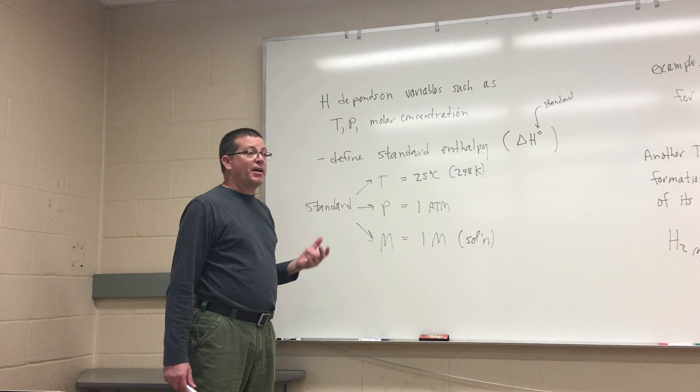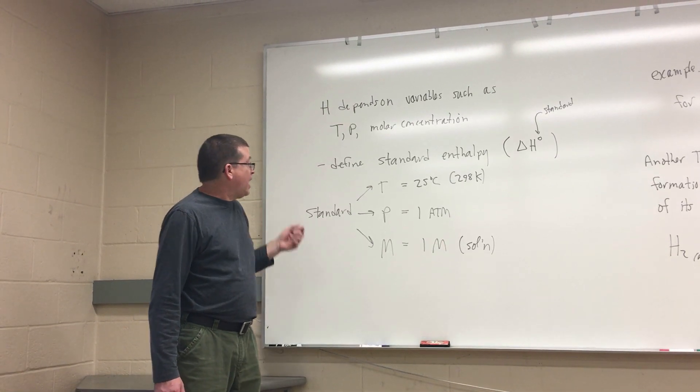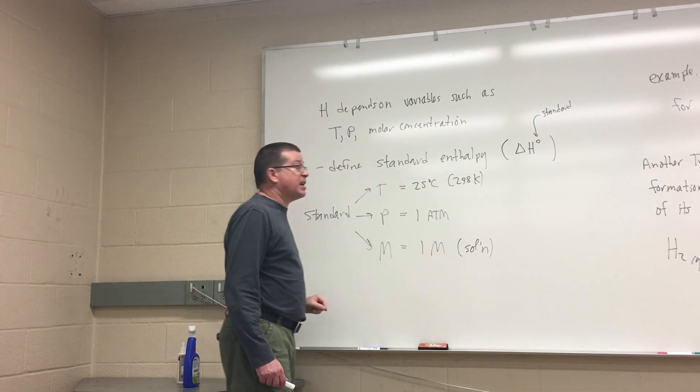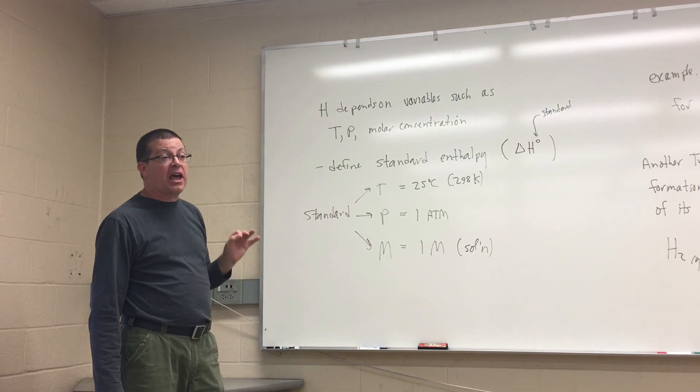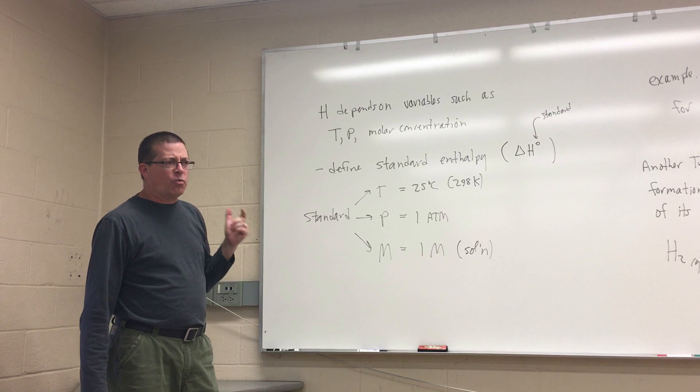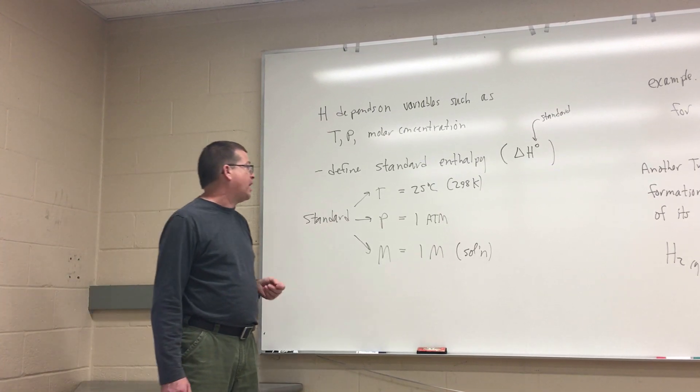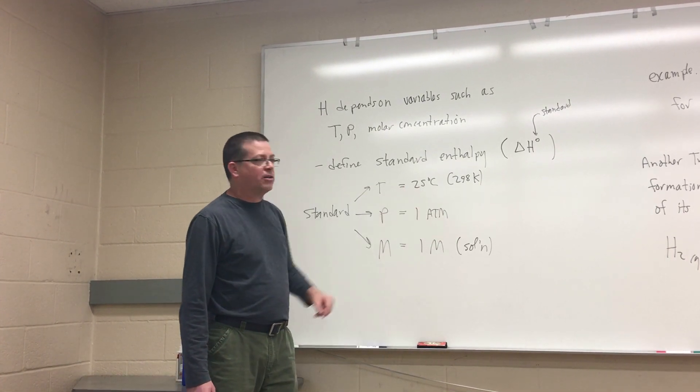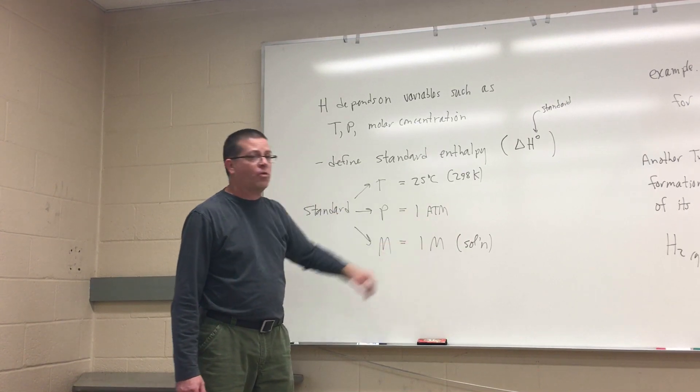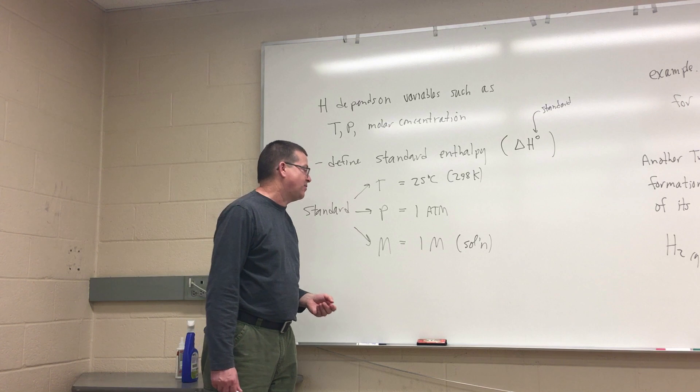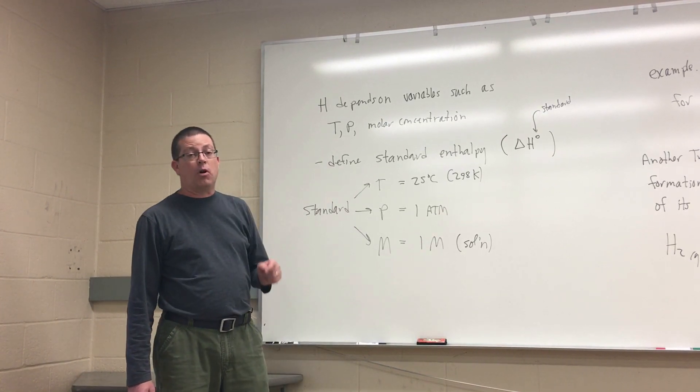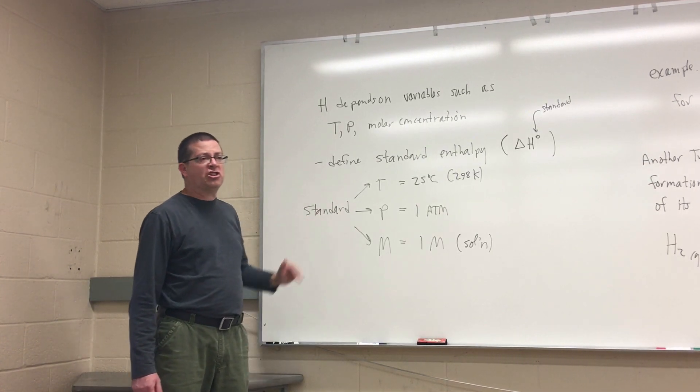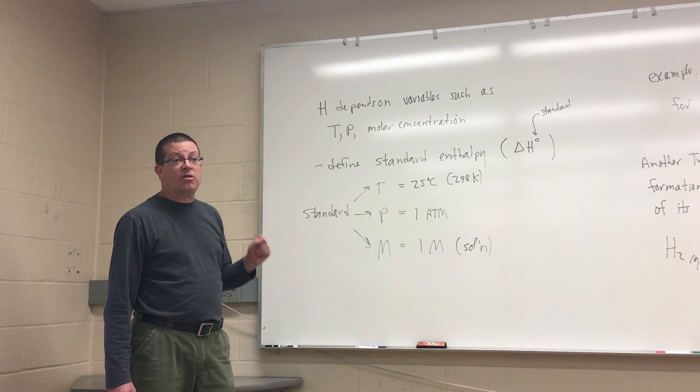Anytime I'm talking about a standard enthalpy, I'm going to represent that with this little zero or naught sign above the H there. So anytime you see that, you know that's going to be a standard enthalpy of some sort. So what are standard temperature, pressure, and molar values? That means any time I measure an enthalpy or an enthalpy difference, I'm going to measure it at 25 degrees Celsius, at an external pressure of one atmosphere, and if I'm talking about a condensed phase, I'm going to make that measurement at one molar concentration of the species of interest. These are my standard state conditions at which I will calculate standard enthalpy changes.